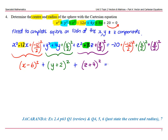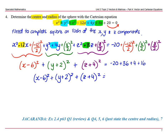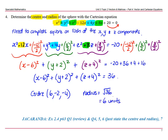On the right-hand side: negative 20, plus 36 (since 12/2 = 6, 6² = 36), plus 4 (since 4/2 = 2, 2² = 4), plus 16 (since 8/2 = 4, 4² = 16). So the equation becomes (x − 6)² + (y + 2)² + (z + 4)² = −20 + 36 + 4 + 16 = 36. That means our centre is (6, −2, −4) and our radius is √36 = 6 units.